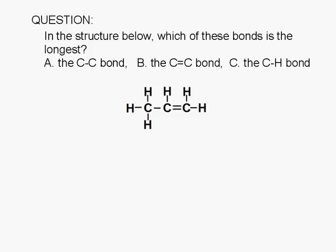In the structure shown below, which of these bonds is the longest? A, the carbon-to-carbon single bond, B, the carbon-to-carbon double bond, or C, the carbon-to-hydrogen bond.